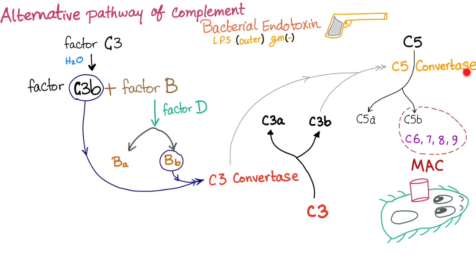C5 Convertase will do what? Convert C5 into C5A and C5B. C5B together with C6, 7, 8, and 9 will form something called the MAC.